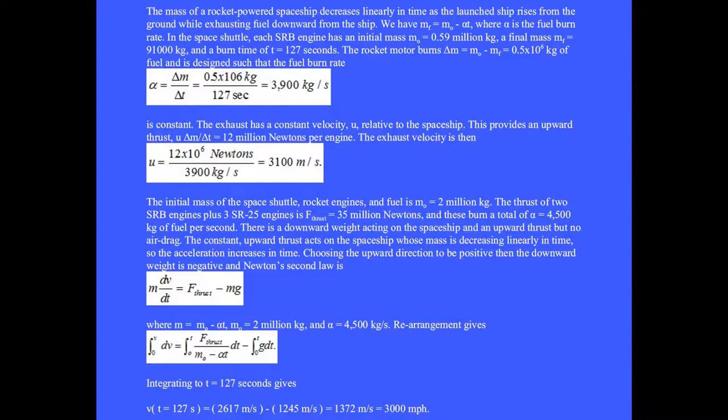The thrust of the two SRB engines plus 3 SR25 engines is 35 million newtons and these burn a total of 4500 kilograms of fuel per second. There is a downward weight acting on the spaceship and an upward thrust but no air drag. The constant upward thrust acts on the spaceship whose mass is decreasing linearly in time so the acceleration increases in time.